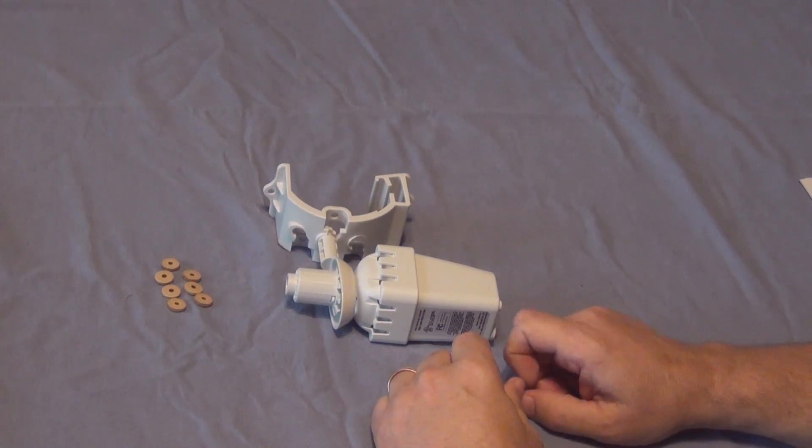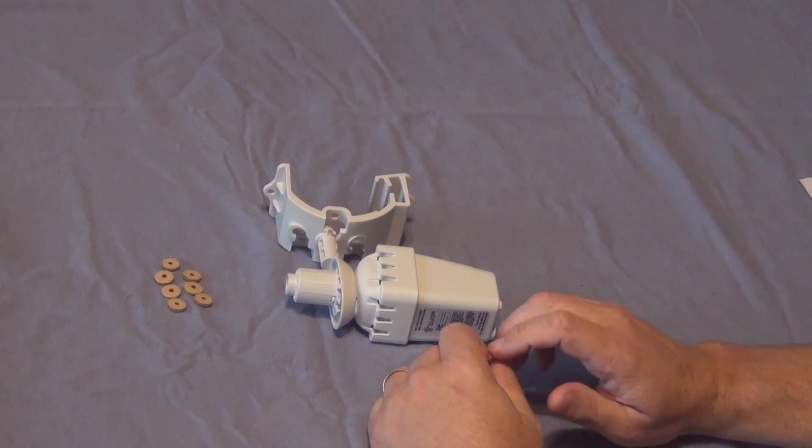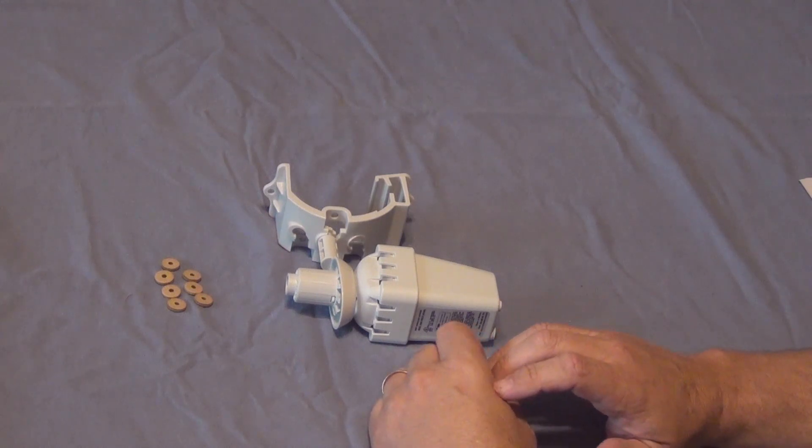Hey, this is Phil from Southeast Irrigation Supply. Today I'm going to show you how to replace the hygroscopic discs on a Rainbird WR2 rain sensor.